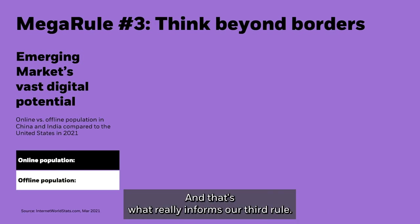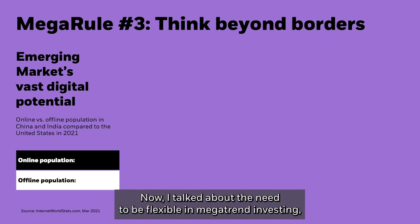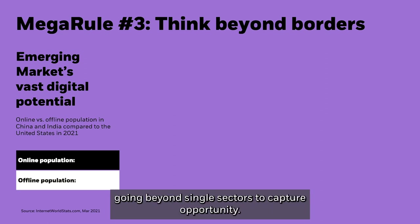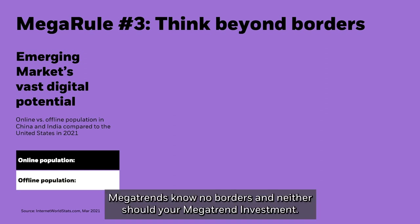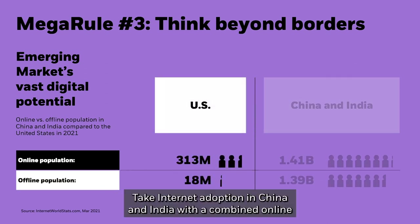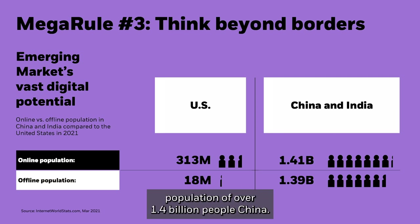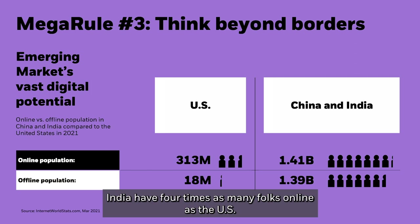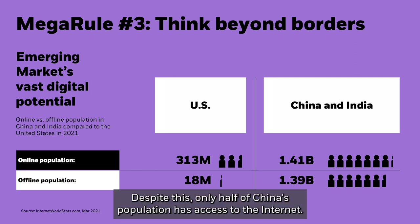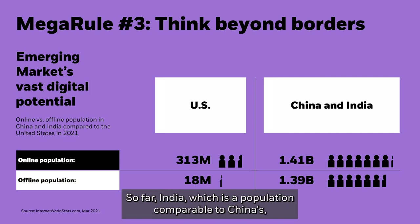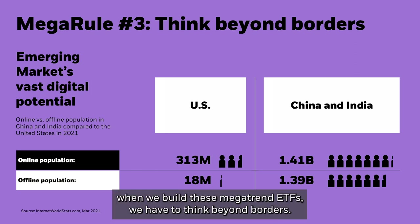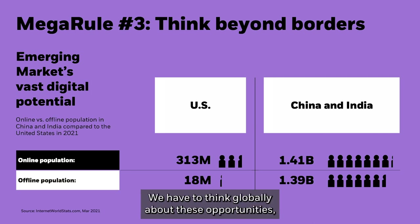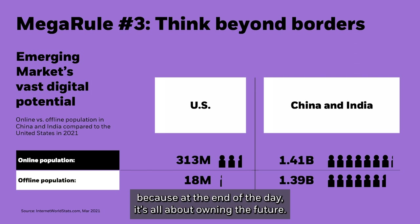That informs Mega Rule 3: think beyond borders. Megatrend investors need to take an unconstrained approach to geography. Megatrends know no borders, and neither should your megatrend investment. Take internet adoption in China and India — with a combined online population of over 1.4 billion, they have four times as many people online as the US. Yet only half of China's population has internet access so far, and India — with a comparable population — has an even smaller share online. The biggest runway is clear. When building megatrend ETFs, we must think globally about these opportunities.